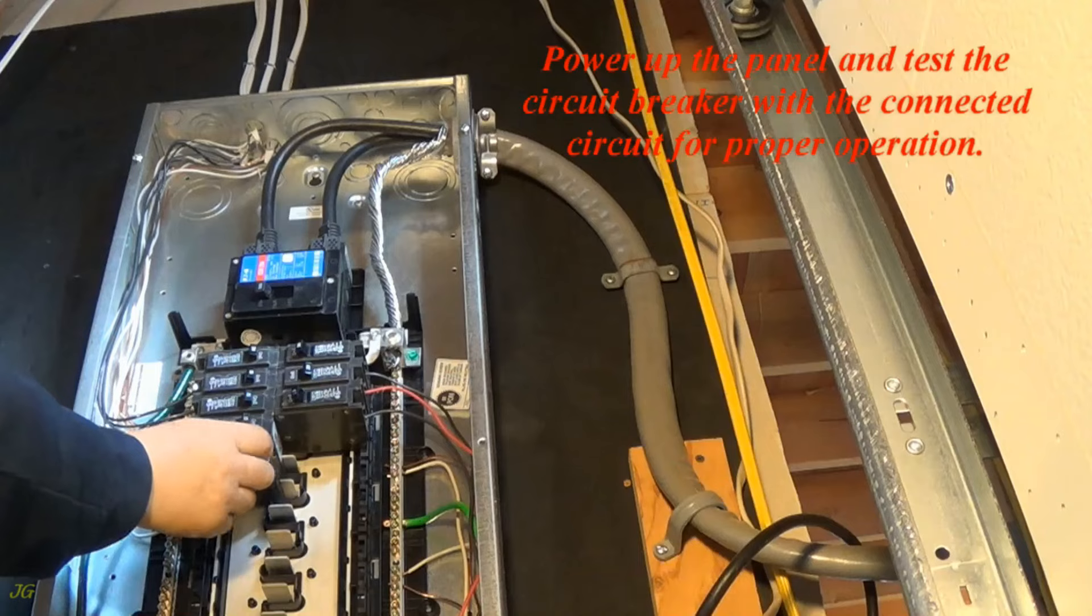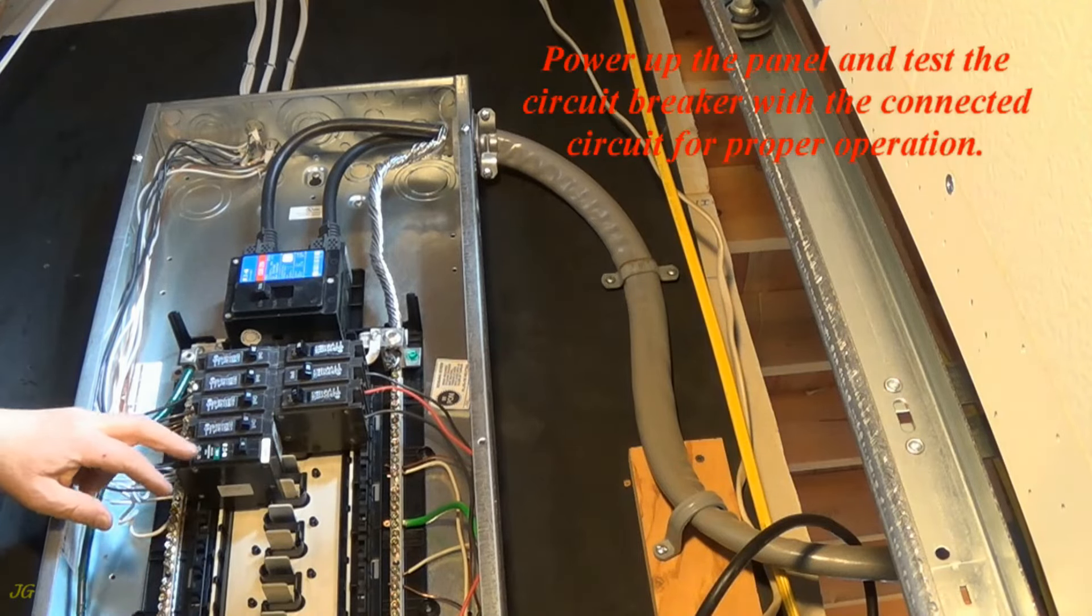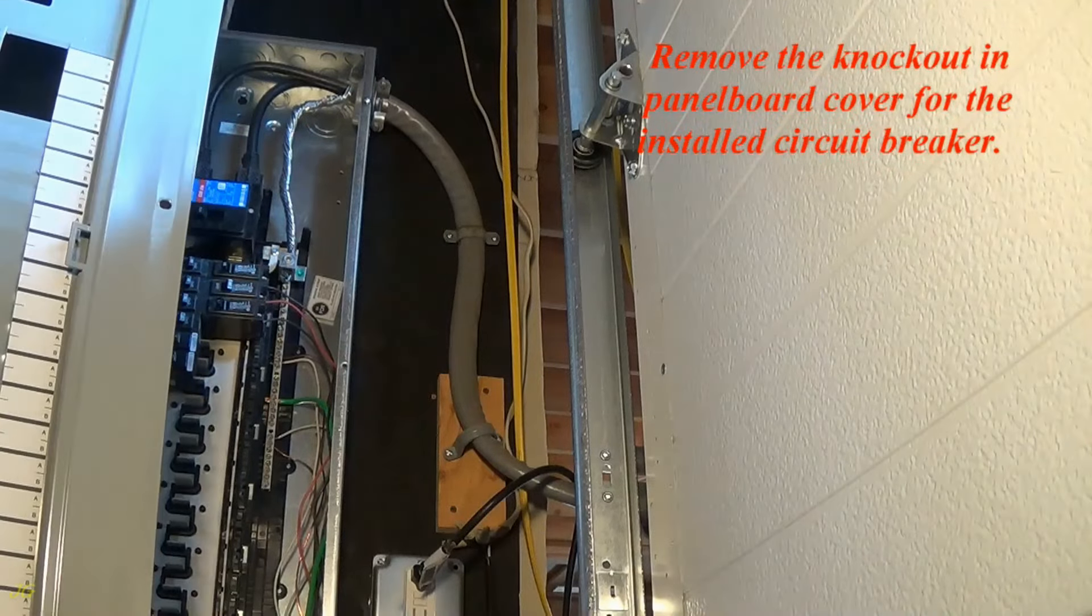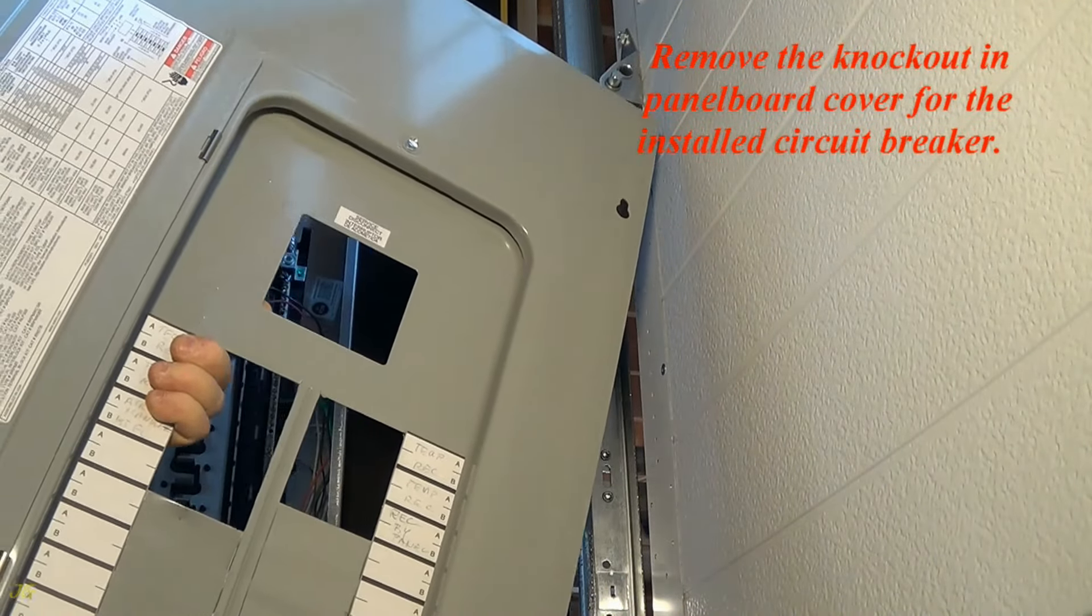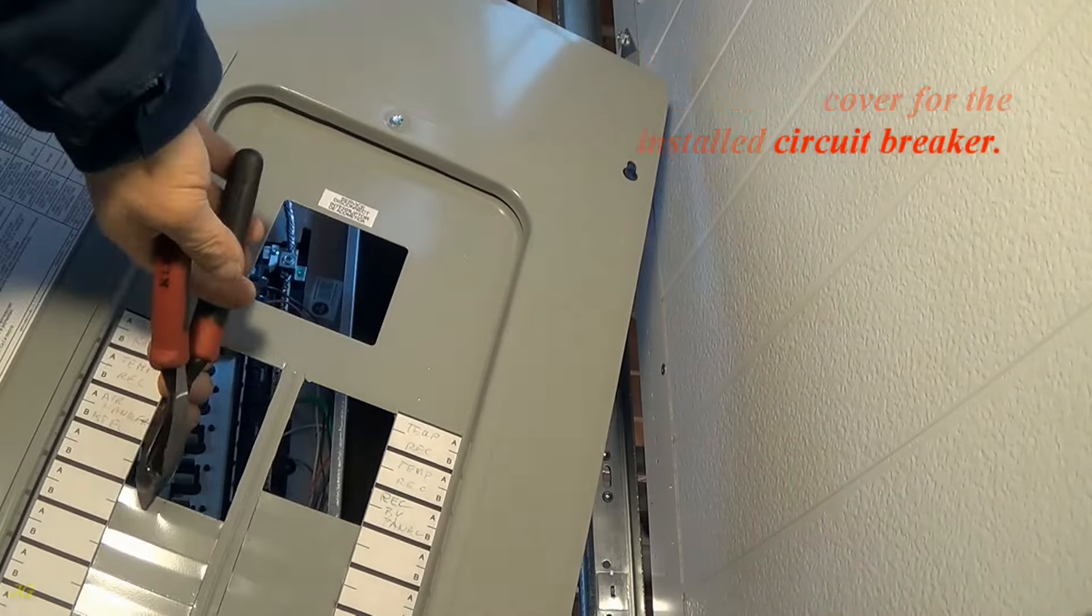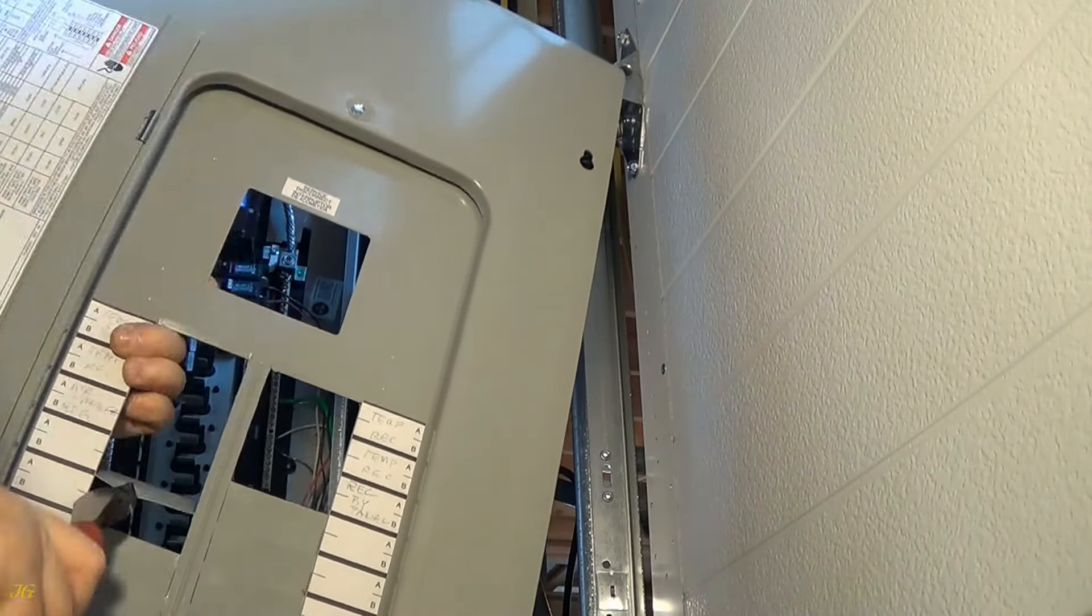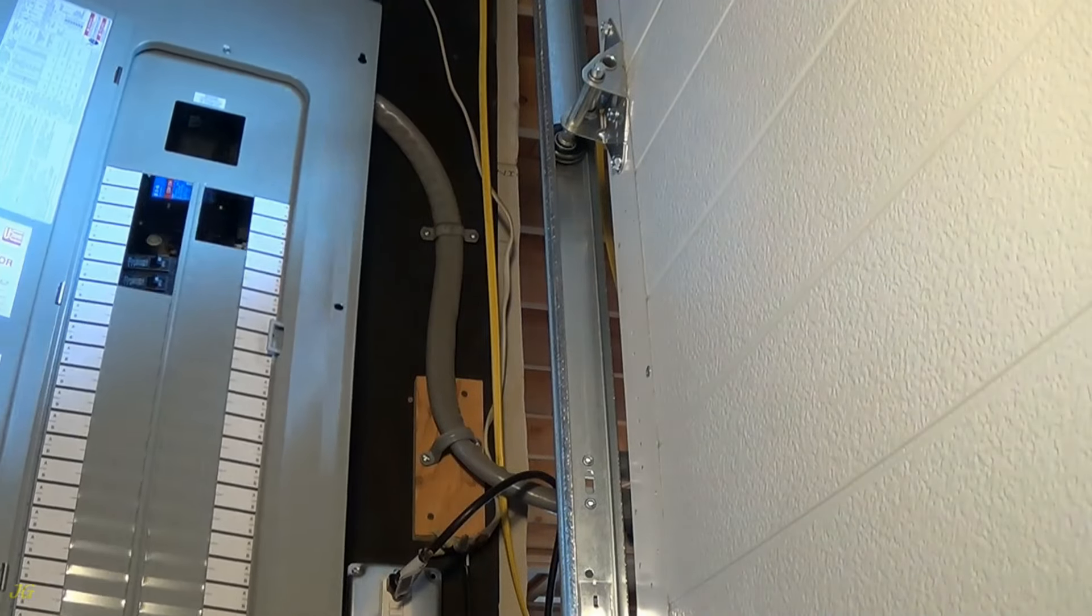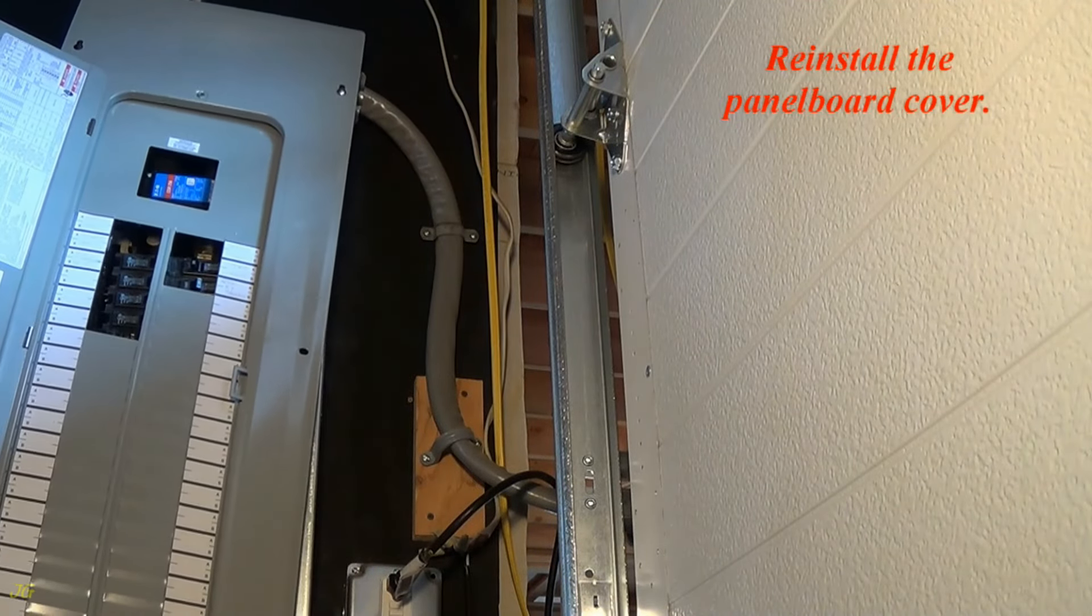Power up the panel and test the circuit breaker. Remove the knockout and panel board cover for the installed circuit breaker. Reinstall the panel board cover.